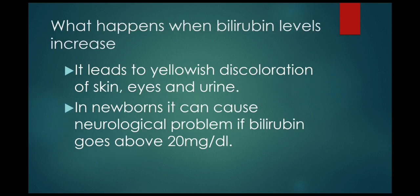What happens when bilirubin levels increase? Once the normal values are exceeded and bilirubin levels cross 3 mg per deciliter, it leads to yellowish discoloration of the skin, eyes, and urine. In newborns, it can cause neurological problems if bilirubin levels go above 20 mg per deciliter.